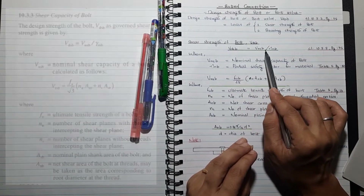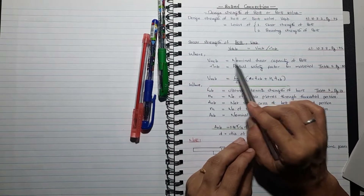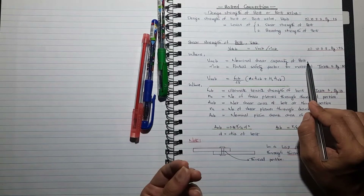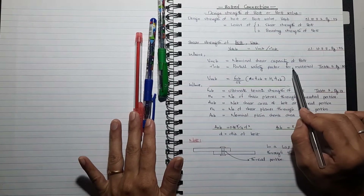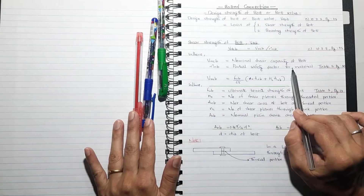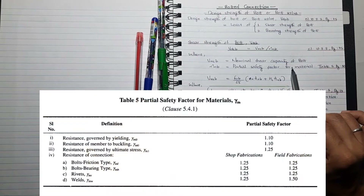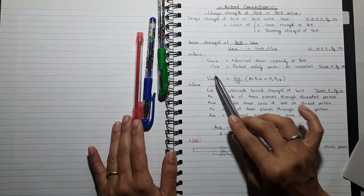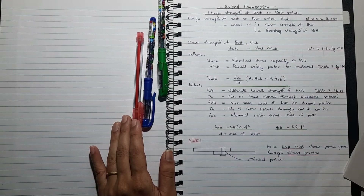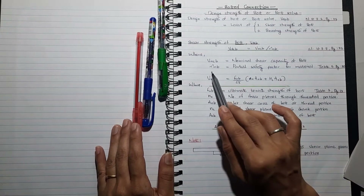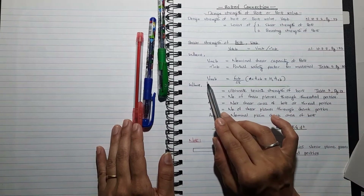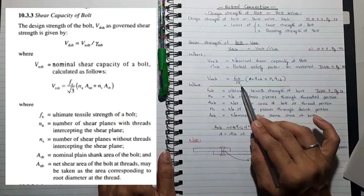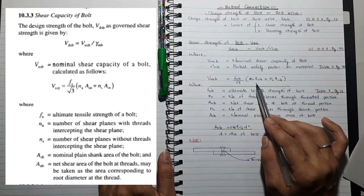VDSB is equal to VNSB divided by gamma MB — that is the bolt value in clause 10.3.3. VNSB is the nominal shear capacity of bolt; gamma MB is the partial safety factor for material, from Table Number 5. Then the VNSB equation is: FU divided by root 3, times NN into ANB plus NS into ASB.